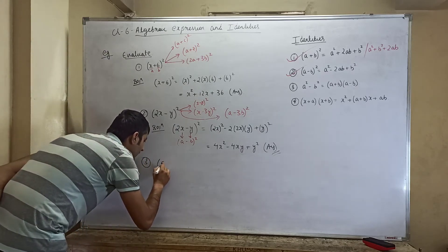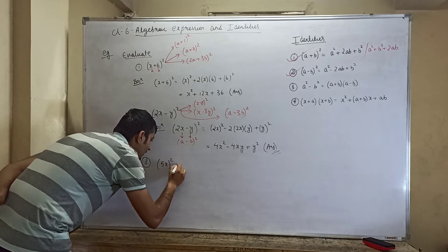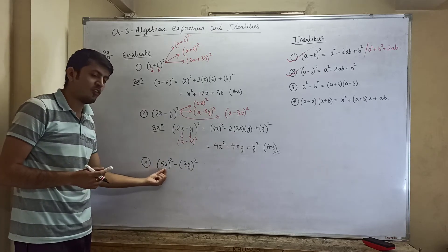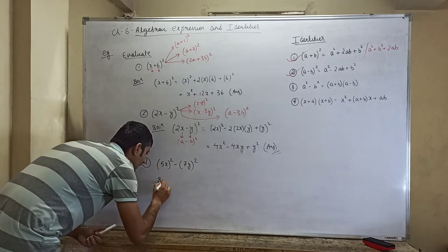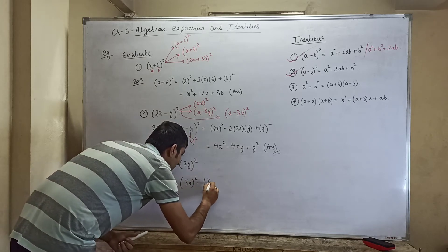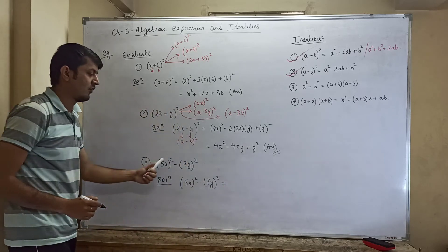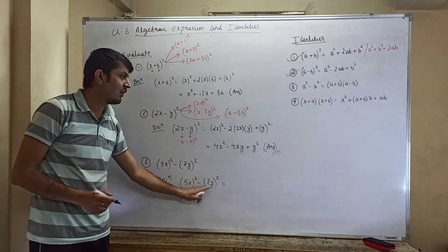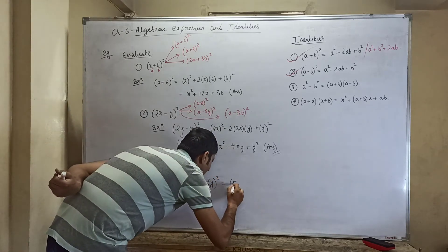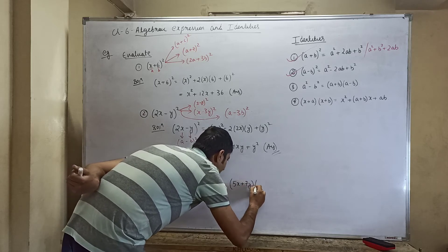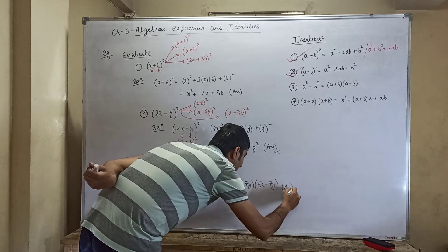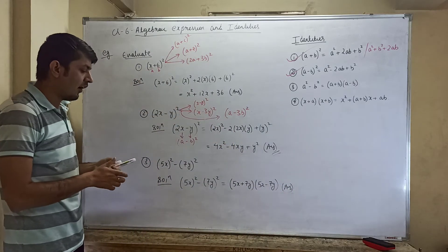Suppose they give you (5x)² minus (7y)². This is of the form a squared minus b squared. Using the third identity — a squared minus b squared equals (a + b)(a − b) — the answer becomes (5x + 7y)(5x − 7y). This is your required answer.